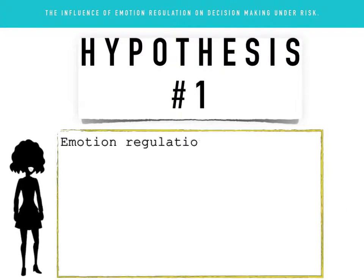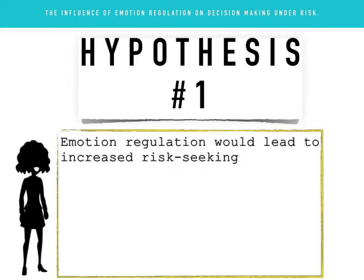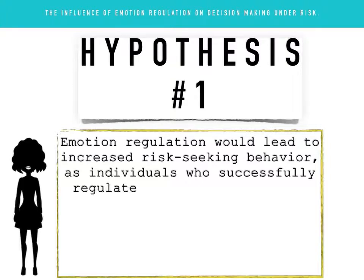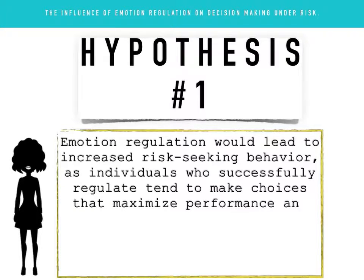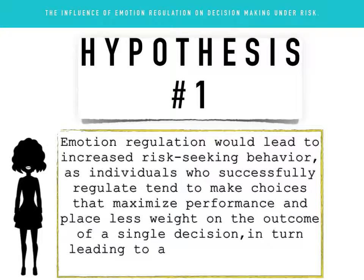Hypothesis 1: Emotion regulation will lead to increased risk-seeking behavior, as individuals who successfully regulate tend to make choices that maximize performance and place less weight on the outcome of a single decision, in turn leading to a reduction in loss aversion.